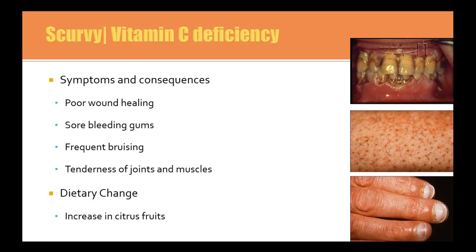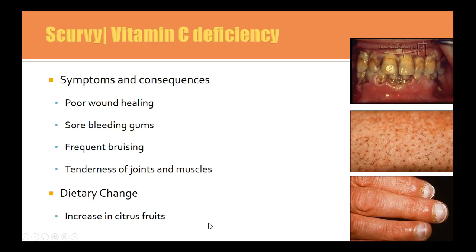The last deficiency is vitamin C, which actually has nothing to do with your immune system. It results in poor wound healing, bleeding gums, bruising and tenderness of joints and muscles. Obviously, increasing your intake of citrus fruits will help address vitamin C deficiency.